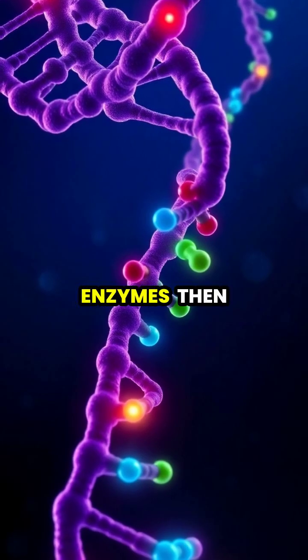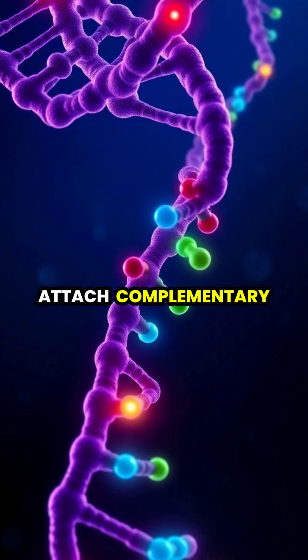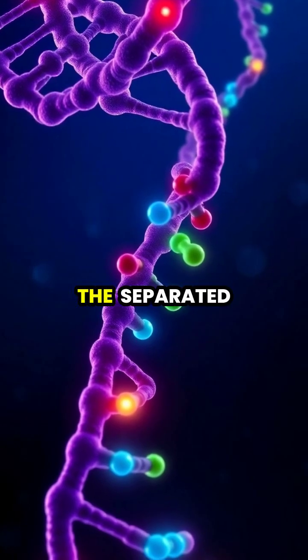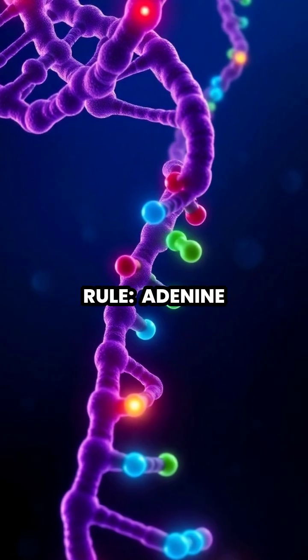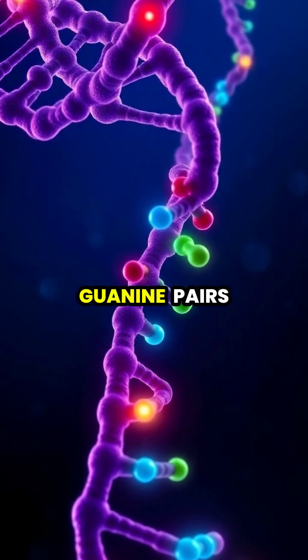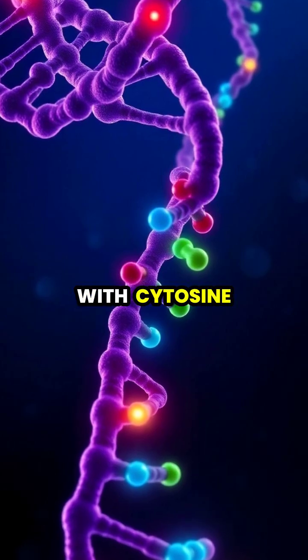DNA polymerase enzymes then attach complementary nucleotides to each of the separated template strands, following the base pairing rule. Adenine pairs with thymine and guanine pairs with cytosine.